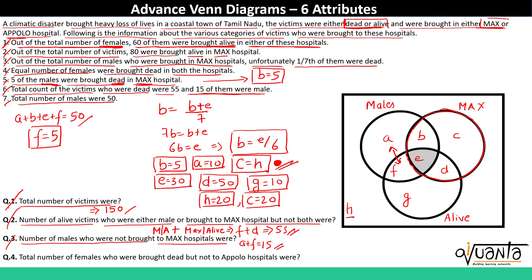Fourth question: total number of females who were brought dead but not to Apollo hospital. We forget the set of males and the set of alive. 'Not Apollo' means they were brought to Max hospital. Region H represents females dead in Apollo hospital, so we exclude it. The answer is simply region C, which equals 20. So 20 is the correct answer. This question was very similar to the previous one — we simply take care of the statements and choose the region carefully.